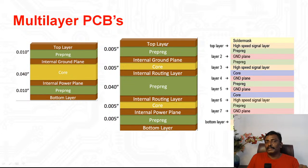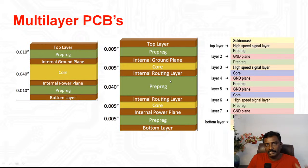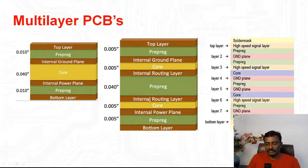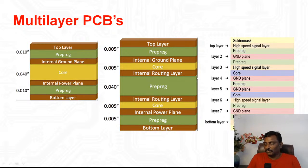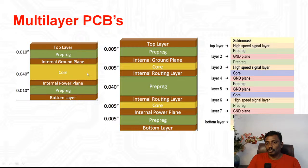For a six-layer board, you have top layer routing, internal ground plane routing, an internal routing layer — especially used for DDR SDRAM where address and data buses go on the internal routing layer — another pre-preg, a core, internal power plane, and bottom layer. Pre-preg is used for insulation between the top layer and the internal ground plane. The core acts as insulation, gives strength, and acts as a dielectric.